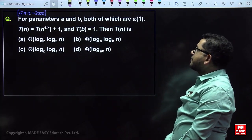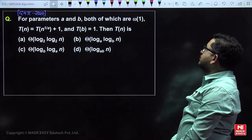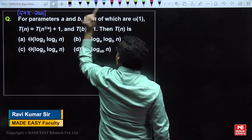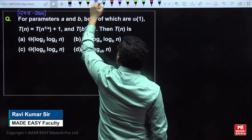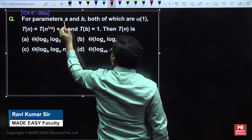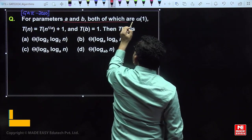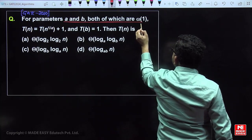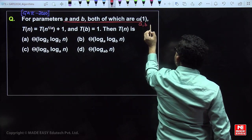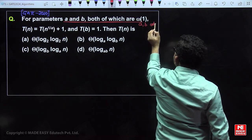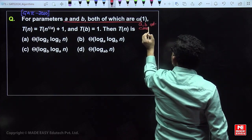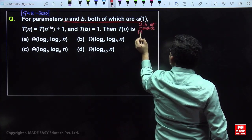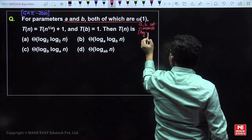See this question: for parameters a and b, both of which are ω(1). Little omega of one means asymptotically greater than constant — it means a and b are not constants, simply asymptotically greater than constant.